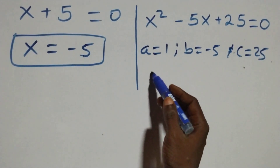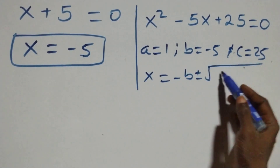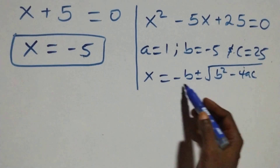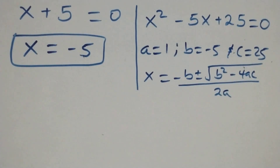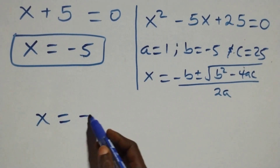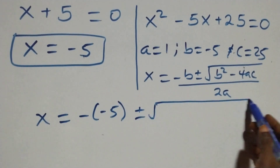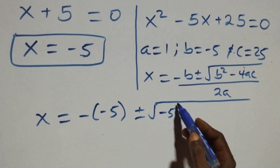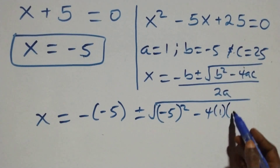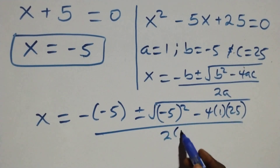Applying the quadratic formula, x equals to minus b plus or minus square root of b squared minus 4ac, over 2a. That gives us x equals to minus minus 5, plus or minus square root of minus 5 squared, minus 4 times 1 times 25, over 2 times 1.